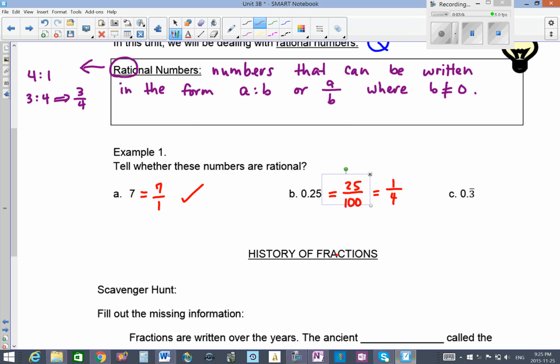What about 0.3 repeating? I'm going to write that as 0.3333. If you're familiar with this fraction, this is the equivalent of 1 over 3. If you have a calculator and do 1 divided by 3, it's going to be 0.3333 repeating. It doesn't end, it only repeats.